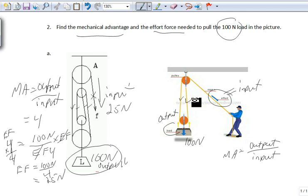So let's use the number of ropes. We have one, two ropes helping hold up the load. This rope doesn't count because we're pulling on it down. So the MA is 2.